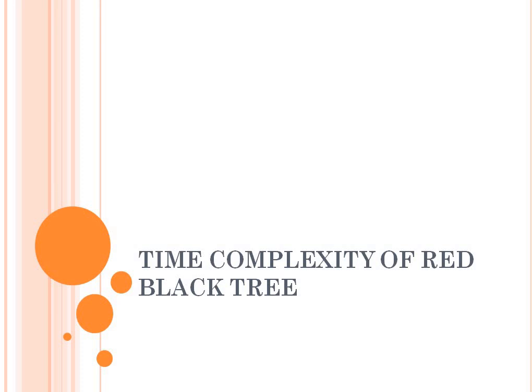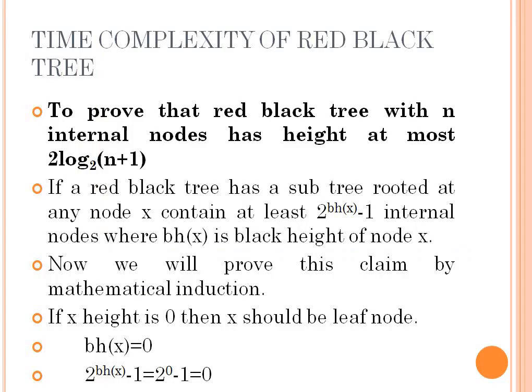Welcome to Tech Girl. Today we are going to see the time complexity of a red-black tree. A red-black tree is a self-balancing binary search tree with maximum two rotations to balance, or normally recoloring is required. It is a roughly height-balanced tree, and insertion and deletion are faster in RBT than AVL tree.